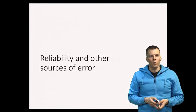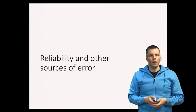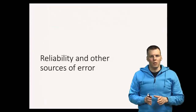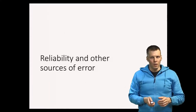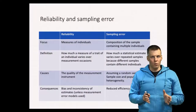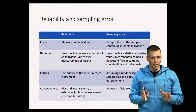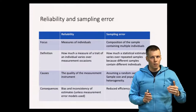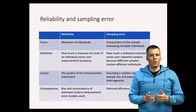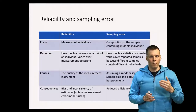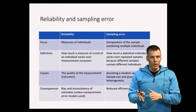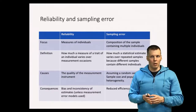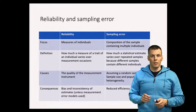Reliability is one way that randomness can influence your study results, but it is not the only way. Therefore it is important to understand how different sources of error are related and how they differ. Reliability and sampling error are two main sources of random errors. Reliability is concerned about measures of individuals — how much your individual measures vary from one measurement occasion to another. Sampling error, on the other hand, is another kind of process that produces random differences in your study results.